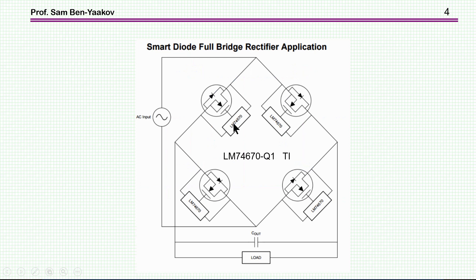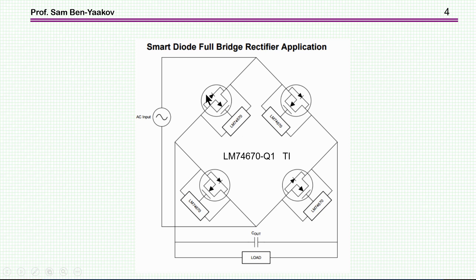Yet another way is to use a commercial IC. I'm showing here the LM74670 by Texas Instruments. This is actually a driver to the gate, which senses the voltage across the transistor. Once the diode starts to conduct, it will turn on the transistor in parallel, and when the voltage reverses and it detects a small backward voltage, it will turn it off. So this is a self-contained unit which operates the MOSFET in parallel to the body diode.